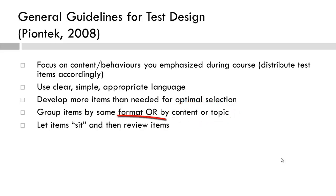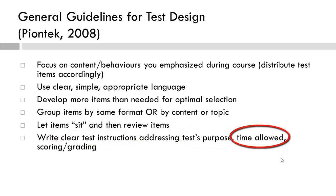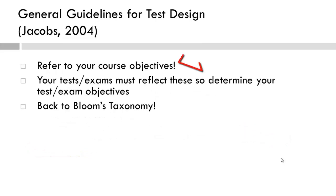Then let the test sit. Review the test and the items. Ensure instructions are clear, the purpose of the test is evident, the amount of time is indicated, as well as the scoring and grading. Jacobs stresses to go back to the learning objectives — ensure your instruction and the test reflects the instructional experiences that hopefully reflect the learning objectives.